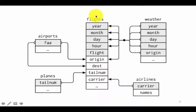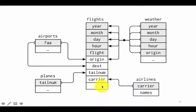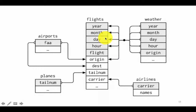Here you have the flights tibble, and we already know it has year, month, day, and hour — where hour refers to the scheduled departure time for that particular flight. Then flight itself refers to the flight number, then the origin airport, destination airport, the tail number of the aircraft, and the carrier. It also has many other fields like scheduled departure time, actual departure time, scheduled arrival time, actual arrival time, arrival delay, and other fields not shown here. The only fields shown here are those that have connections with other tables.